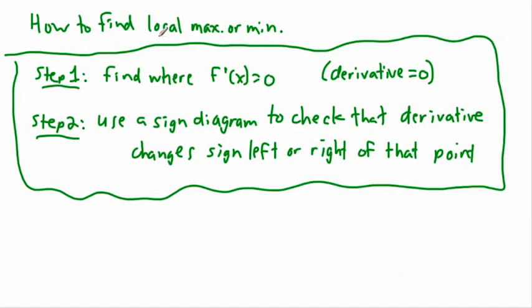I remember watching South Park — there was one episode with the underpants gnomes. These little people would steal your underwear, and they had three steps: step one, steal underpants; step two, they didn't know — just a shrug; step three, profit. Well, at least we know our steps: step one, find where the derivative is zero; step two, draw a sign diagram; and step three — well, profit not really.